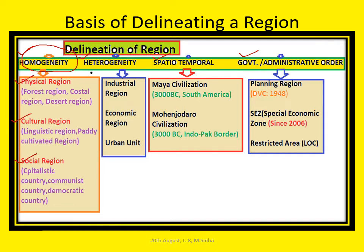The second basis is cultural region — examples include linguistic states or regions, and wheat or paddy cultivated areas. The third basis is social region — examples include democratic regions and capitalistic regions, such as China which is a communist block. On the basis of homogeneous criteria, we can define, identify, or delineate a region.